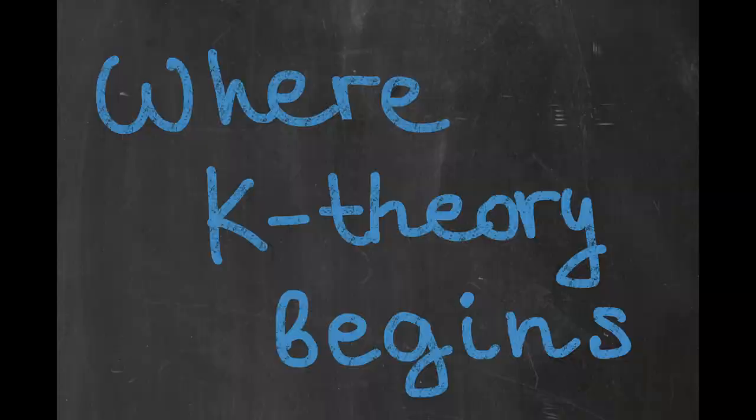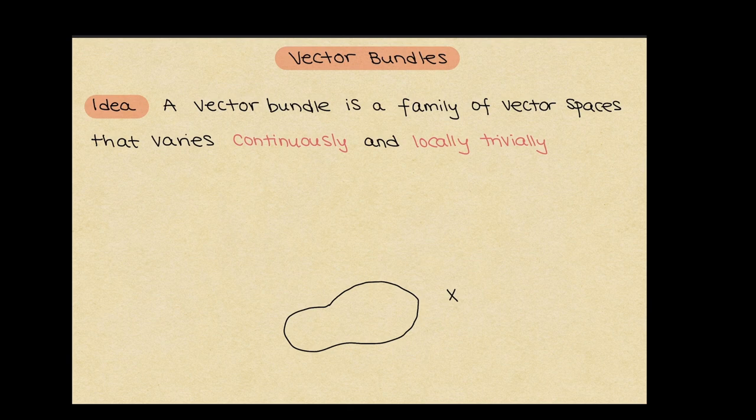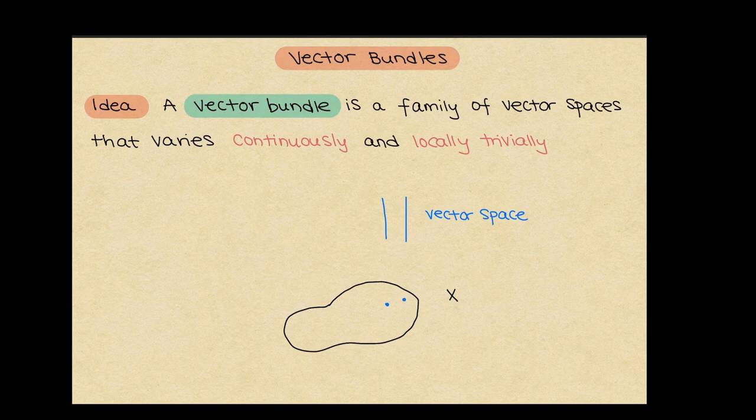Now K-theory is the same magic spell applied to vector bundles instead of natural numbers. Peter will show us what it means. One of the main players in this story is what we call a vector bundle. The idea is that it's a family of vector spaces — one over each point of our geometric object — that should have two properties. The vector spaces should vary continuously as we move around in the geometric object, but they should also locally look very simple.